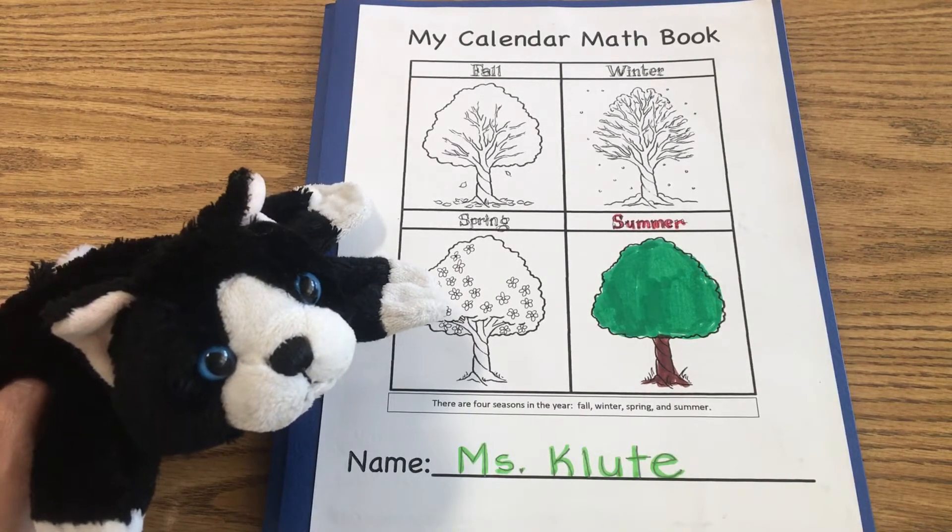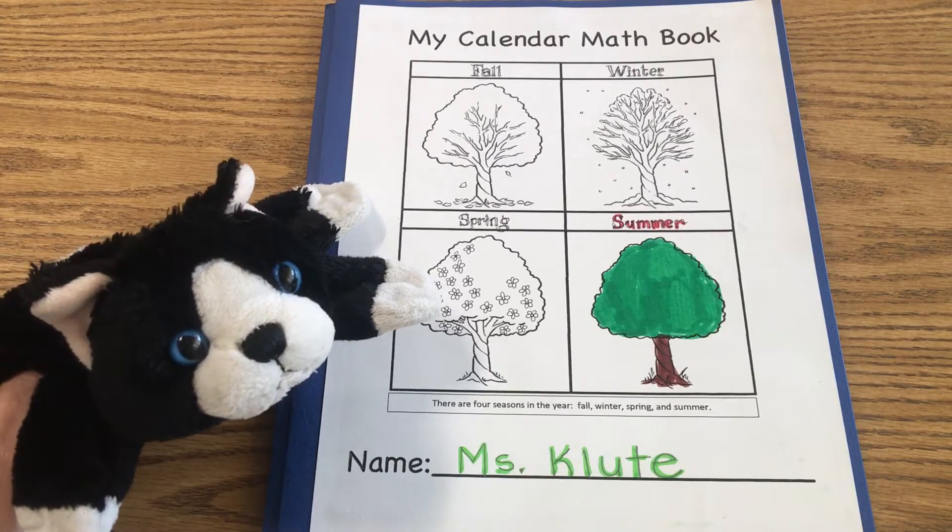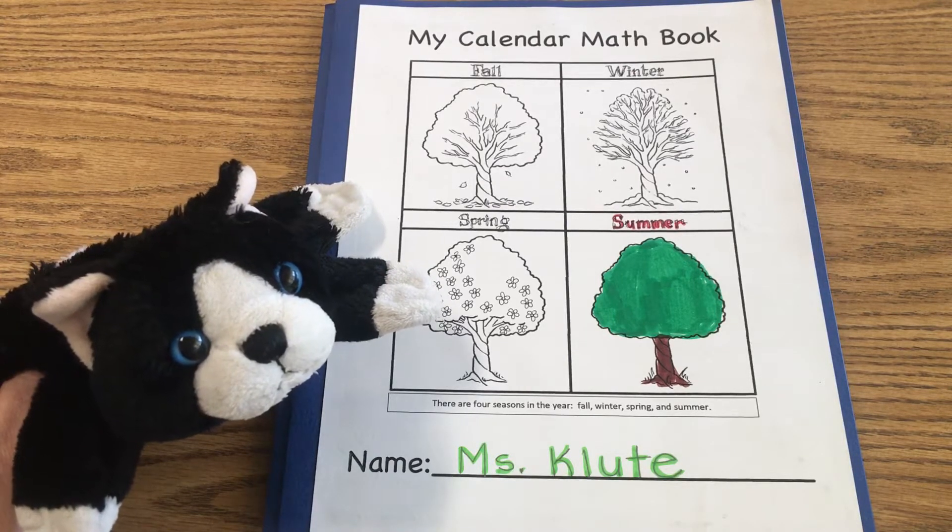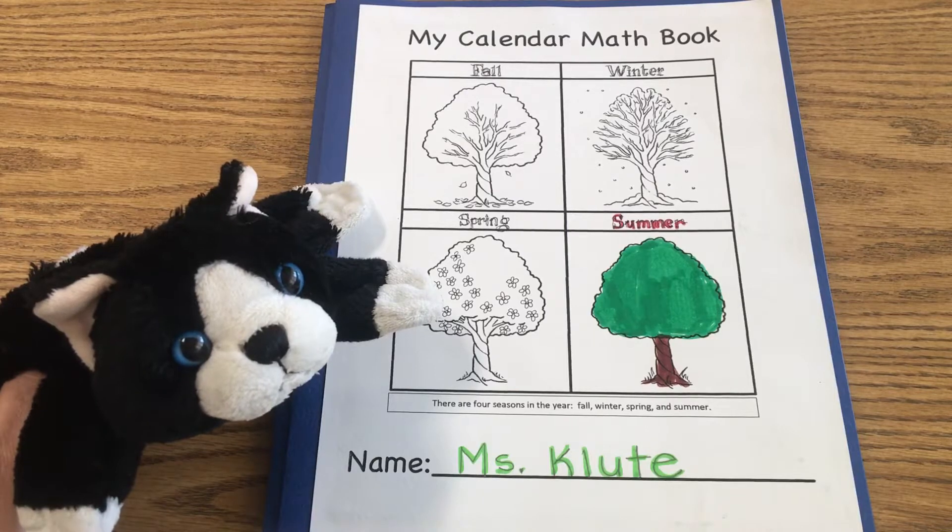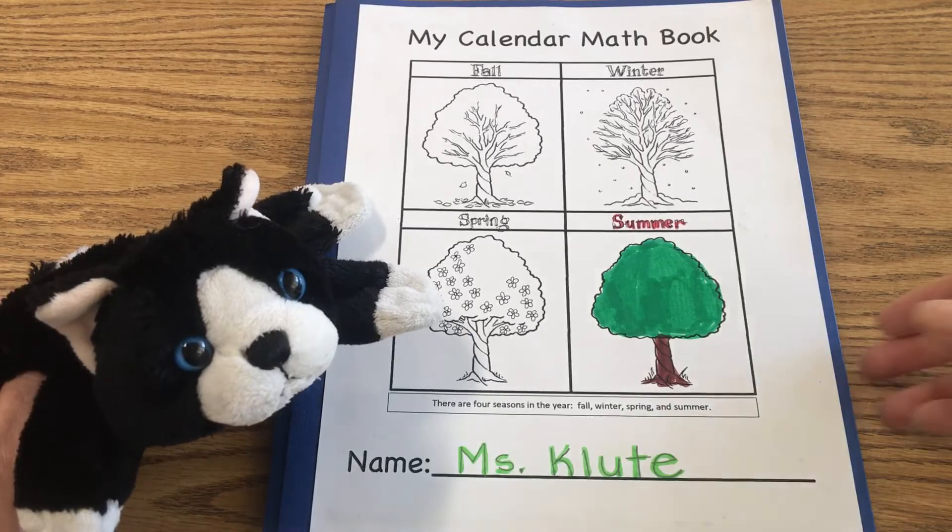It's time to begin our math lesson and Little Blackie wanted you to know something. The reason why the cats move to our kindergarten classroom is because they love learning and they love all these subjects that we do. So let's begin our math lesson today.